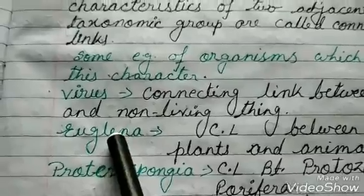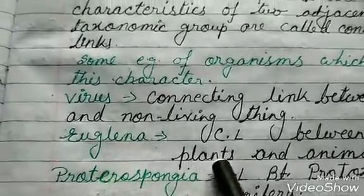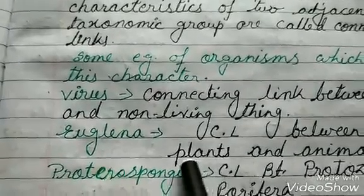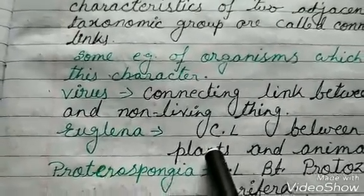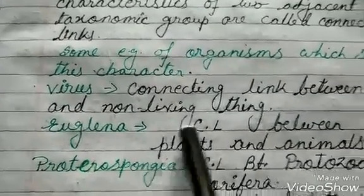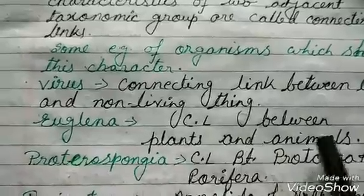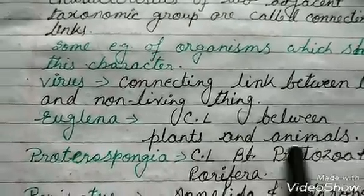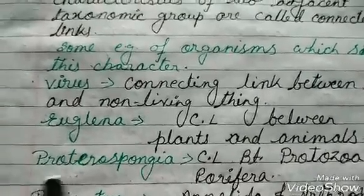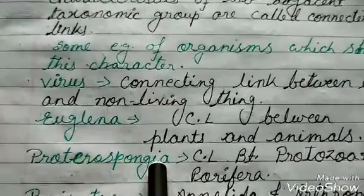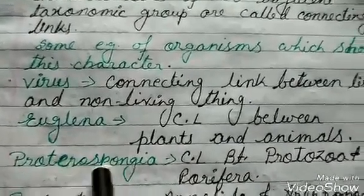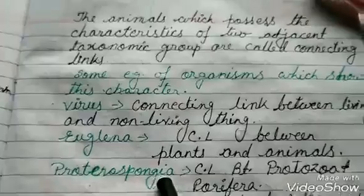Euglena: as we know, Euglena comes under the phylum Protozoa, but it resembles some characteristics of plants. So it is the connecting link between plants and animals.